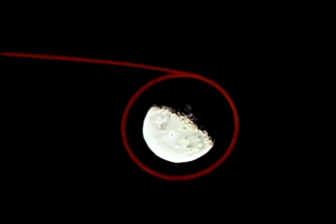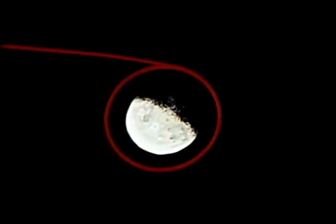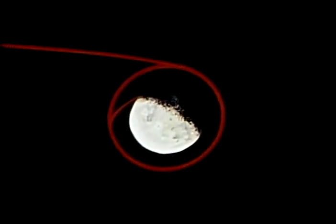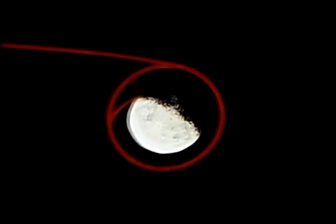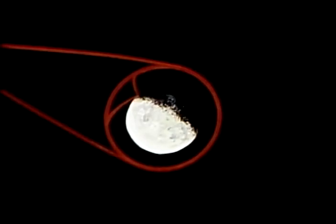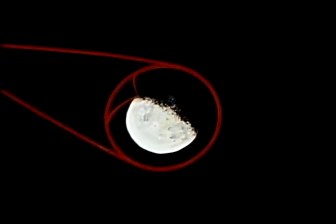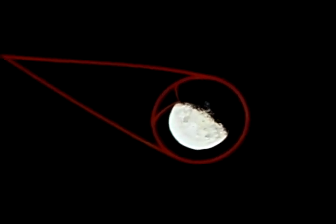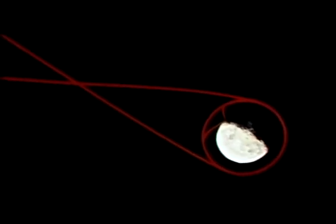Then, while one astronaut remains in orbit aboard the command module, two astronauts will be deployed in the lunar module to the moon's surface. Later, the lunar module must rendezvous with the command module, and the homeward-bound spacecraft will be injected into a trans-Earth trajectory.